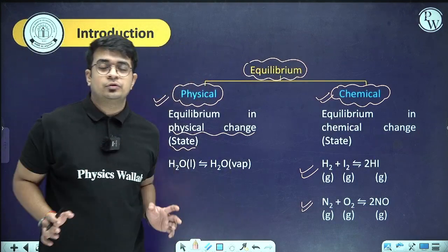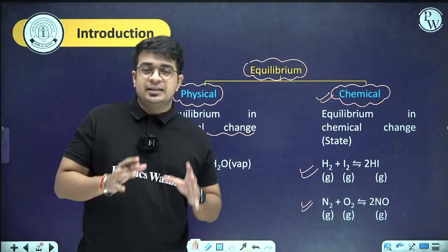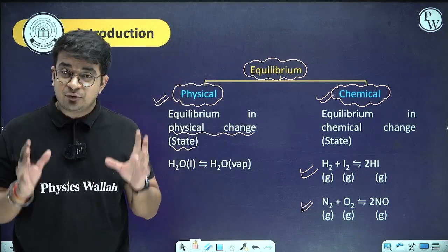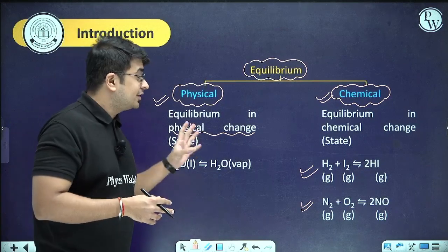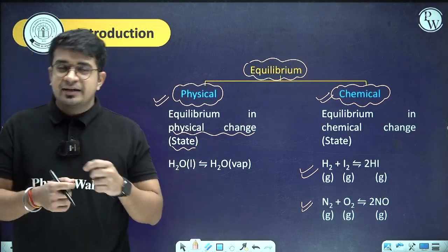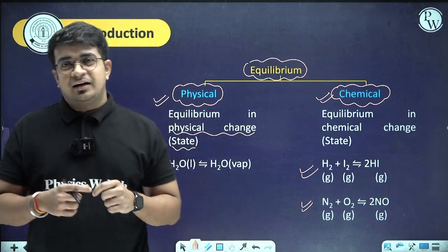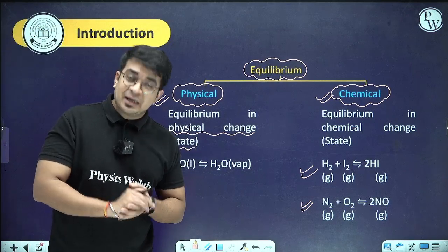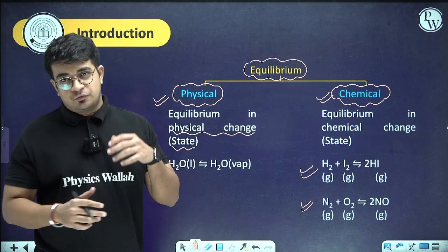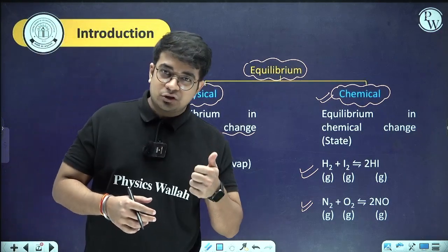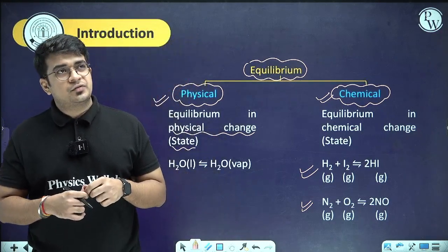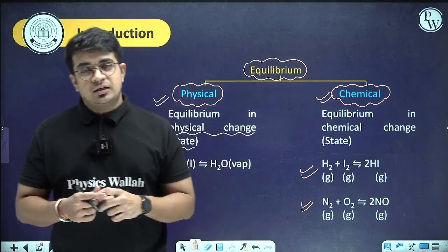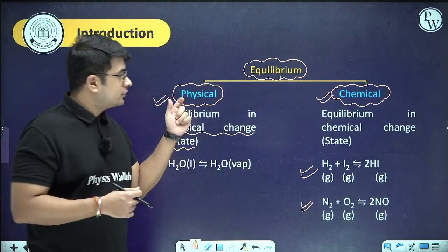This chapter is very easy — just understand each part's theoretical aspect and apply it to questions. The major portions are: calculation of equilibrium constant, which is the most important part, and Le Chatelier's principle with its various applications. These two parts are very important in chemical equilibrium.